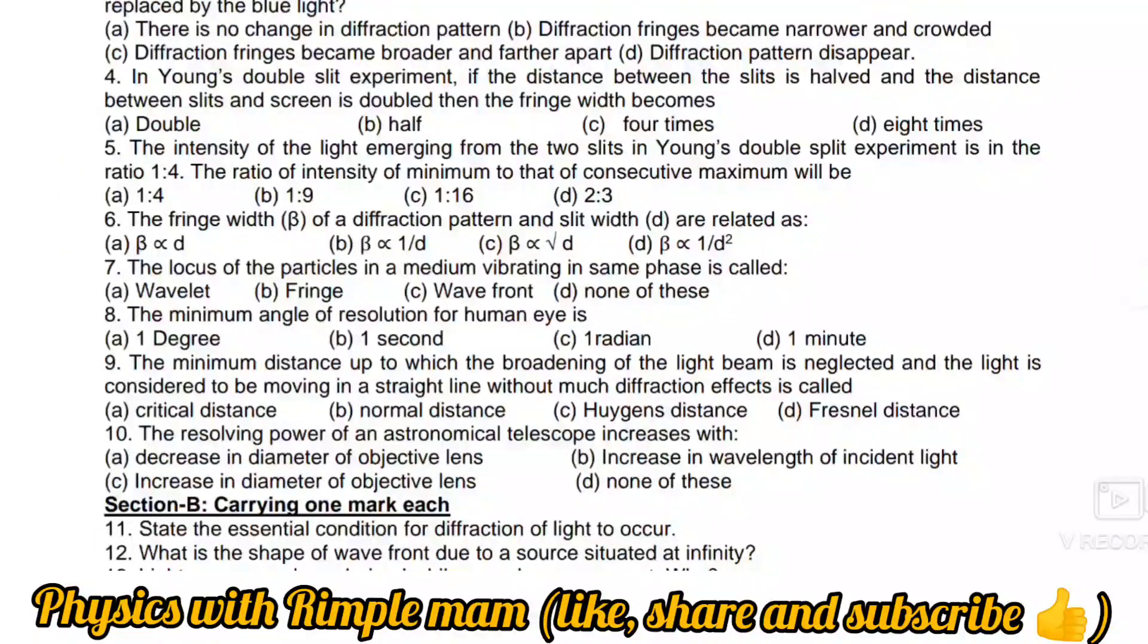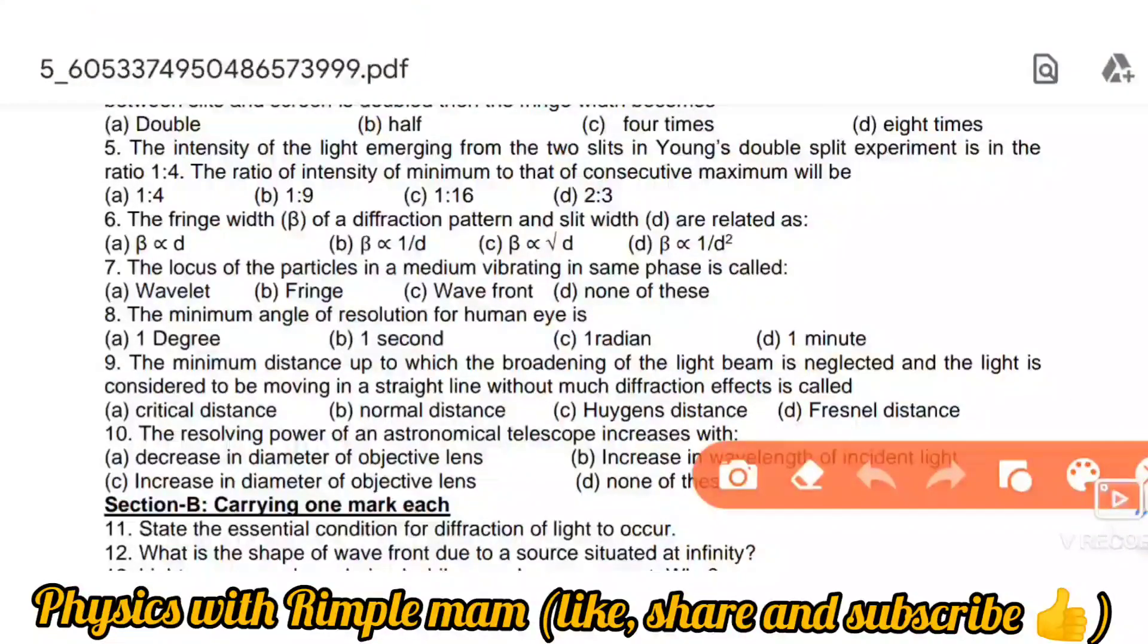Next: The intensity of light emerging from two slits in Young's double slit experiment is in the ratio 1:4. We need to find the ratio of maximum to minimum intensity. We'll use the formula where i1 over i2 equals a1 over a2 whole squared.